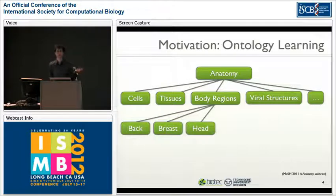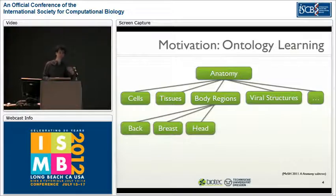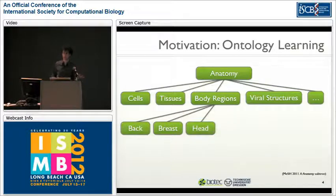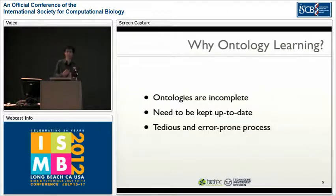We can expand that idea of set expansion to ontology learning. Here is a small subset of the MeSH anatomy subtree. In the lower left corner you can see three terms: back, wrist, and head, which we use as C terms and try to find more terms belonging to that set. Since these three terms have the same parent term, we regard them as siblings. We're trying to find more siblings with the same parent term — we could find tip, arm, or foot.